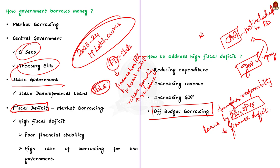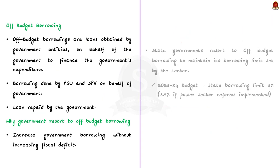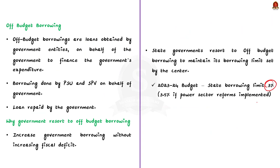More than the union government, it is the state governments that primarily resort to off-budget borrowing. This is because the union government places a limit on state market borrowings to ensure financial stability. According to the 2023-24 budget, the market borrowing limit of state governments is 3% of their GSDP, extendable to 3.5% when the state takes up power sector reforms. Innovatively, states resort to off-budget borrowing and shift the burden to a PSU or SPV — this is the main reason why off-budget borrowing of state governments is increasing.